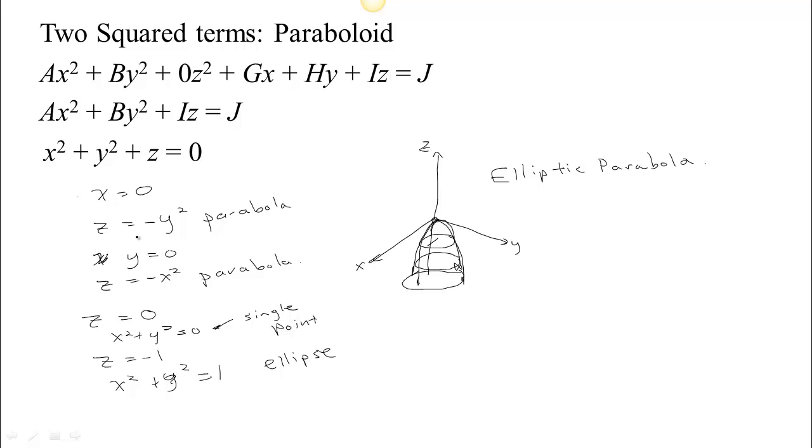We can see no matter what constant we make x, we see parabolas, right? Whatever constant we make y, then in the other directions we see parabolas. If we make z some constant, then we're going to see ellipses. Therefore, this is a paraboloid. I call them elliptic paraboloid. So parabola would just be the curve, but a paraboloid is the surface. That's the difference between the two names.